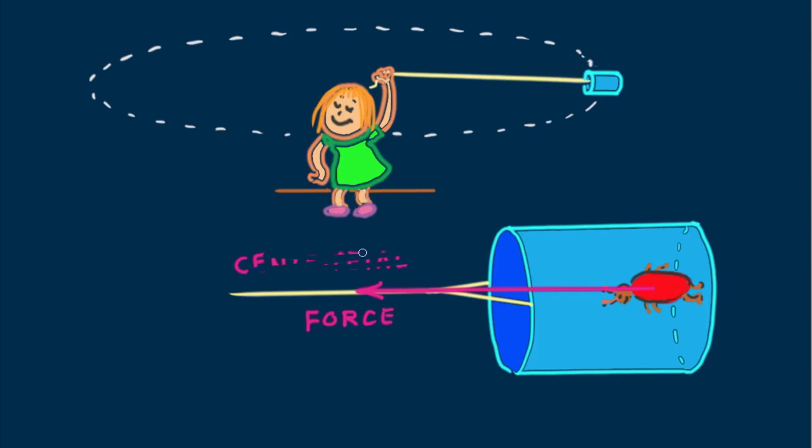This centripetal force, the bottom of the can pressing on her feet, provides a normal force on her. To her it is a real force, as real as the force due to gravity. I'm neglecting the small downward force of gravity on her and considering only horizontal forces here.